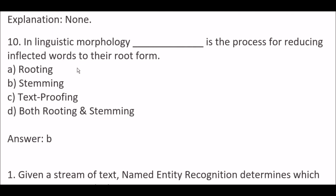Next question: in linguistic morphology, the blank is the process of reducing inflected words to their root form. Options are: A) Rooting, B) Stemming, C) Text proofing, D) Both rooting and stemming. The right answer is option B, stemming. In linguistic morphology, stemming is the process of reducing inflected words to their root form.